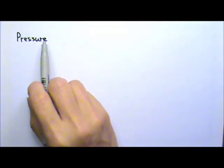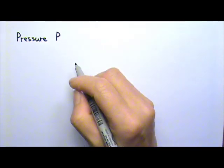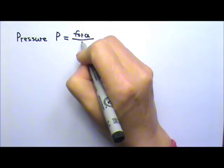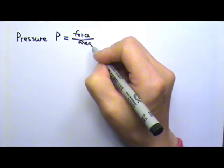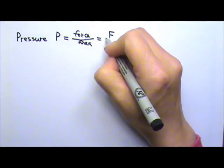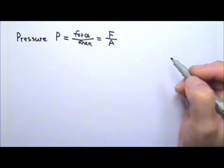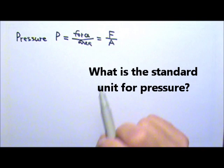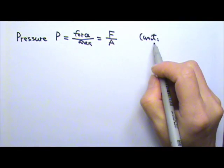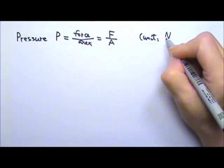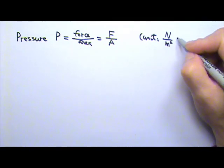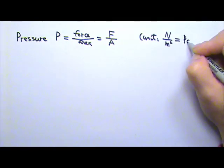Now let's look at pressure. We use uppercase P for pressure. The definition for pressure is force divided by area. Force per area. And we use capital F for force and capital A for area. What do you think is the standard unit for pressure? The standard unit is force, newtons, divided by area, meter squared. So it is newtons per meter squared. We give it a special name and we call it Pascals.